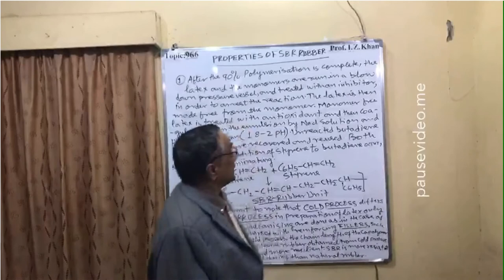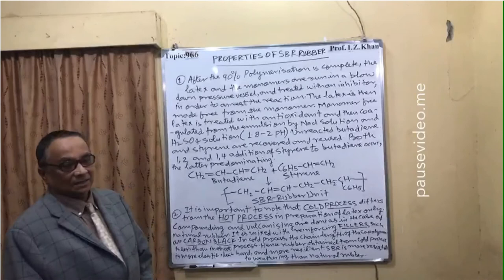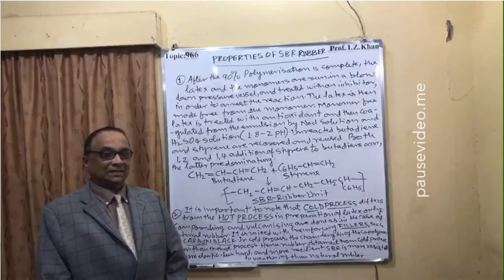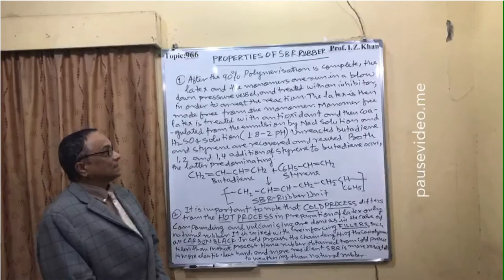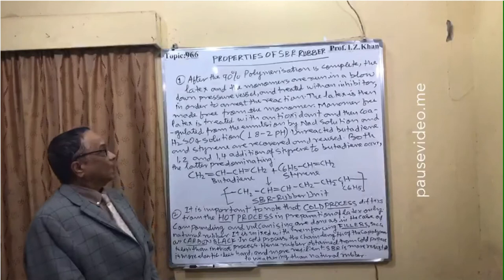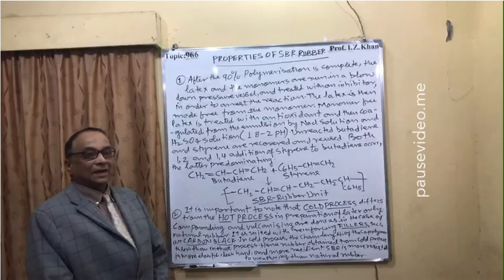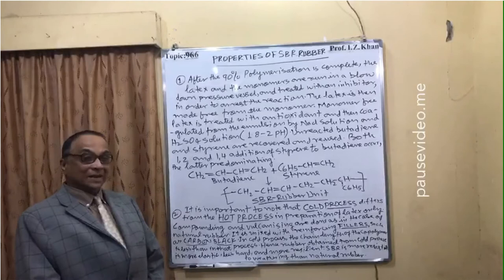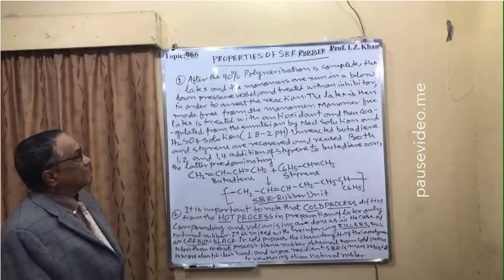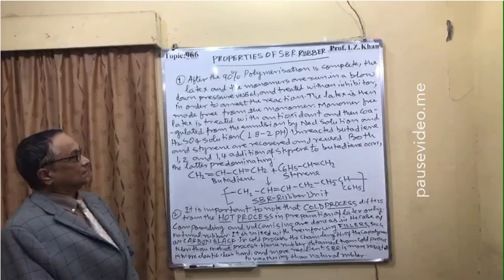Point one: when polymerization reaches 90% completion during the manufacture of SBR rubber, the latex and monomers are run into a blow-down pressure vessel and treated with an inhibitor in order to arrest the reaction. The remaining monomer and latex are blown down under pressure and treated with inhibitor to stop the reaction completely.